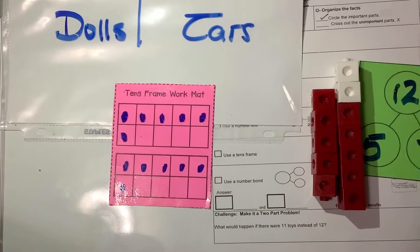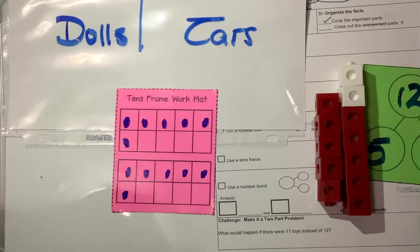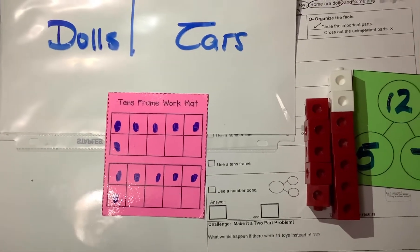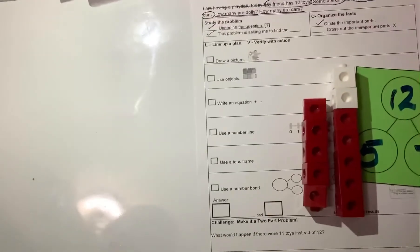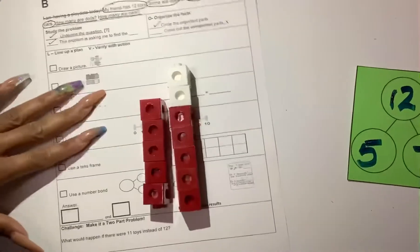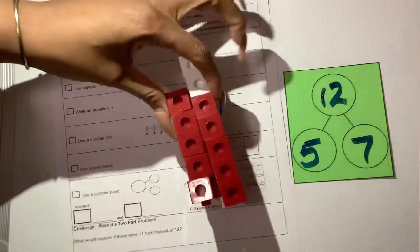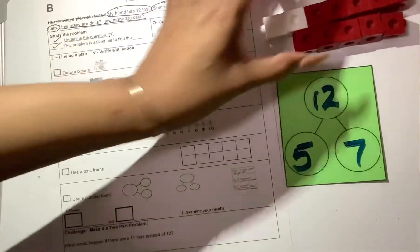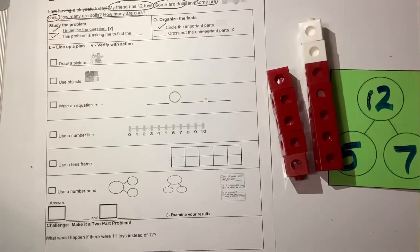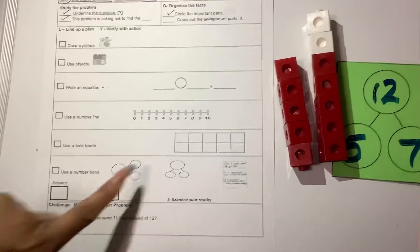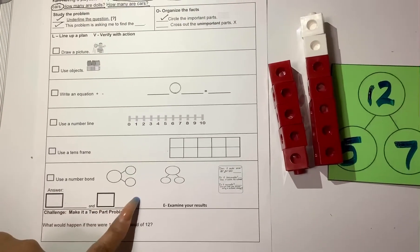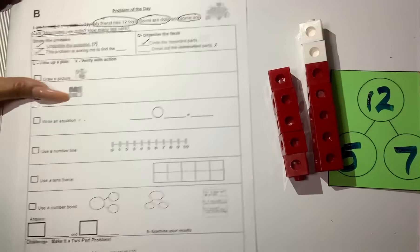So boys and girls, there is no right or wrong answer. You just have to show your combination of 12, the 12 toys. Some are dolls and some are cars. And make sure that we are using your cubes so that you can fill in your number bond, or you're using drawings, you can use your 10 frame and write your answer on the answer key. Remember to put dolls. Remember to put cars. And then we have our challenge problem.